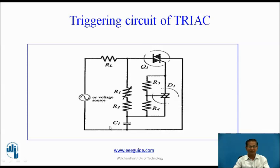During the negative half-cycle, capacitor C starts charging again, but now the charging path is exactly opposite: source, C1, R2, R1, RL. So this time the lower plate is positive and the upper plate is negative. As long as capacitor voltage is less than minus VS (switching voltage), SBS remains in non-conducting state. Once the capacitor voltage crosses minus VS, SBS conducts and the current flows through the gate of triac, SBS, and C1. The capacitor discharges and this current acts as a triggering current, and the triac conducts with current flowing in the anticlockwise direction. In this way, the triac conducts in both the positive half-cycle and the negative half-cycle.